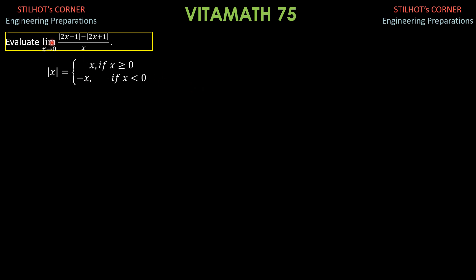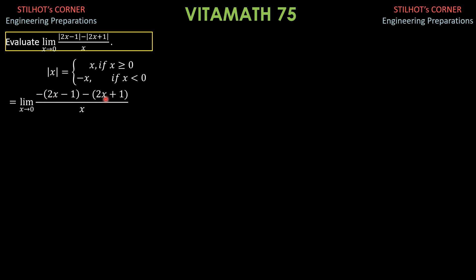As x approaches 0, we look at the expressions. Only the first term could be negative inside. The second term is positive as x approaches 0 because 2 times 0 plus 1 is always positive 1. So the absolute value of (2x minus 1), for the possibility that it is negative, becomes negative of (2x minus 1), and (2x plus 1) remains unchanged. That gives us the limit as x approaches 0 of: negative of (2x minus 1) minus (2x plus 1), all over x. Expanding: negative 2x minus 2x gives negative 4x, and negative of negative 1 is positive 1, minus 1 is 0.